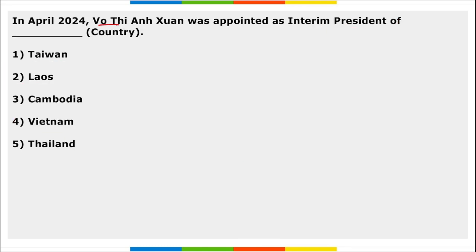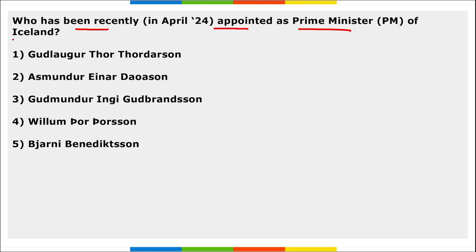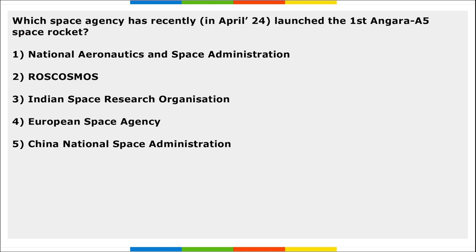Next: Vo Thi Anh Xuan was appointed as the interim president of Vietnam. Take a note of this. Next: who has been recently appointed as the Prime Minister of Iceland? Bjarni Benediktsson has been appointed as the Prime Minister of Iceland.